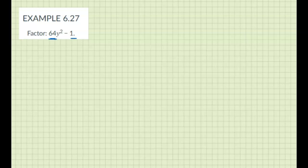These are both perfect squares, like 8 squared is 64, 1 squared is 1, but it's missing the middle term. So this is a difference of squares.